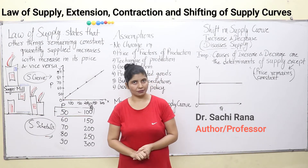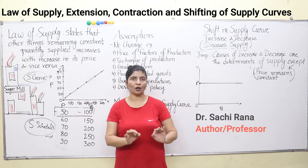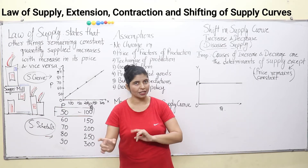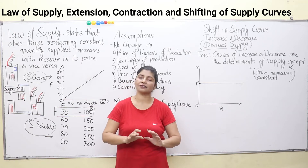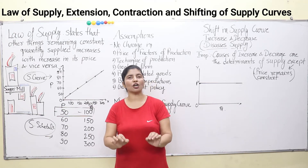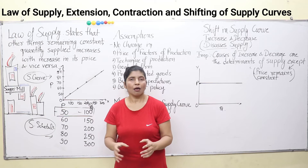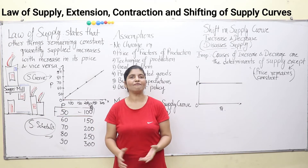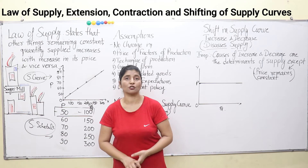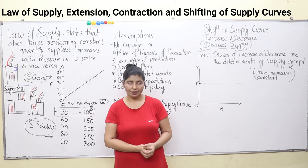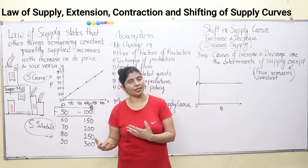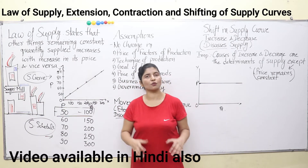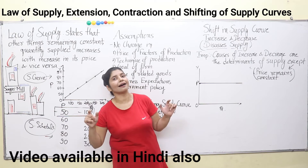If you are a producer, you will sell the commodities produced in your factory at a higher price or lower price? The answer is very obvious — you will sell your commodities at higher price. Why? Because at higher price, you are getting a better margin and you will have better profits. So why sell at lower prices? In that case, you will be incurring losses. To avoid losses, all the producers want to sell their commodities in the market at higher price.